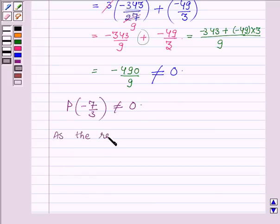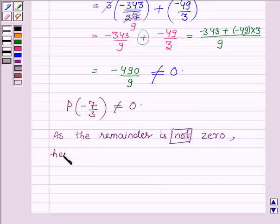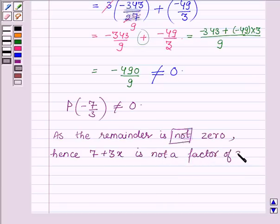Since as the remainder is not 0, hence 7 plus 3x is not a factor of 3x cube plus 7x.